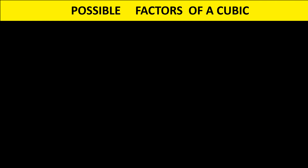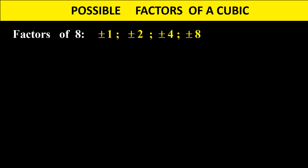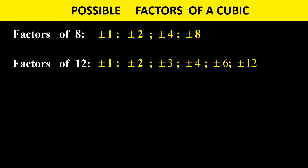Let's look at factors of a number. For example, the factors of 8 are all the numbers that can divide exactly into 8: plus or minus 1, plus or minus 2, plus or minus 4, or plus or minus 8. Factors of 12 are plus or minus 1, plus or minus 2, plus or minus 3, plus or minus 4, plus or minus 6, and plus or minus 12.